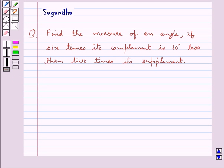Hello and welcome to the session. In this session we discuss the following question which says find the measure of an angle if 6 times its complement is 10 degrees less than 2 times its supplement.